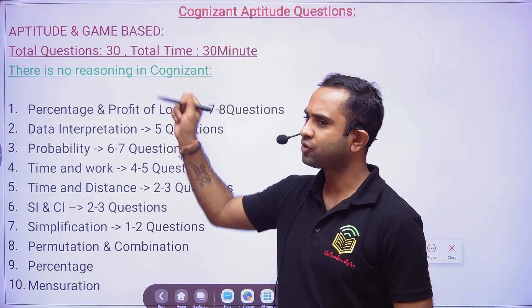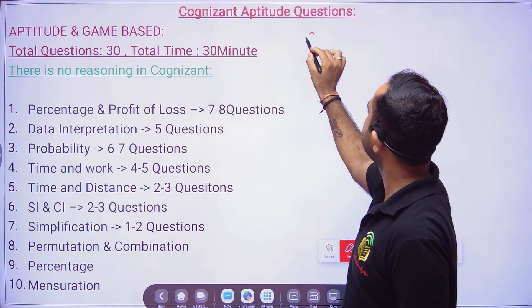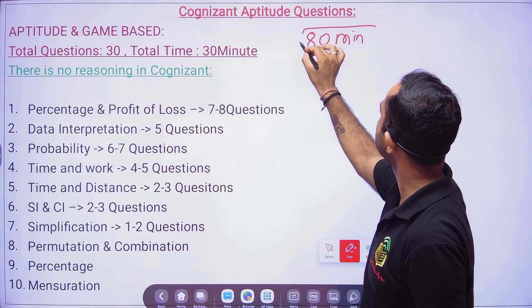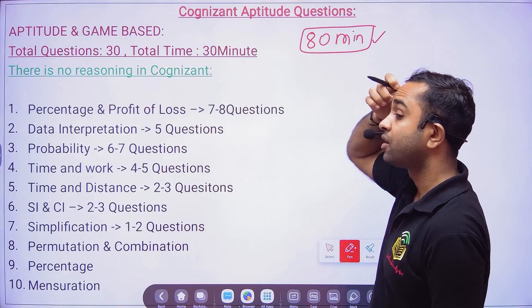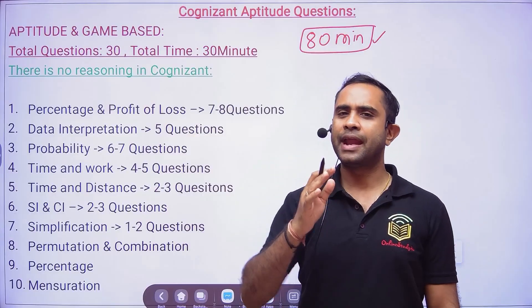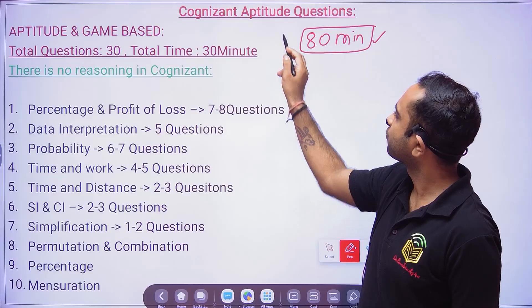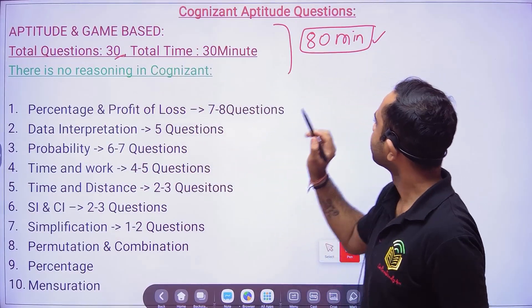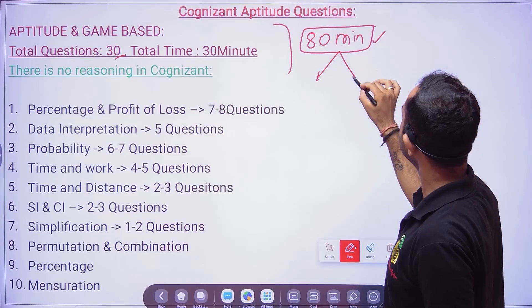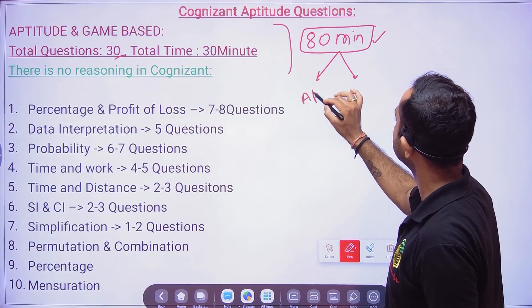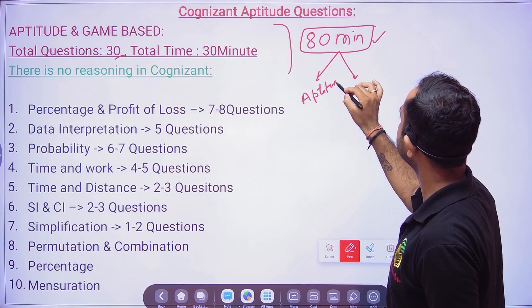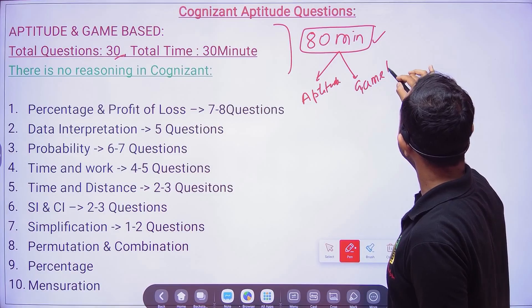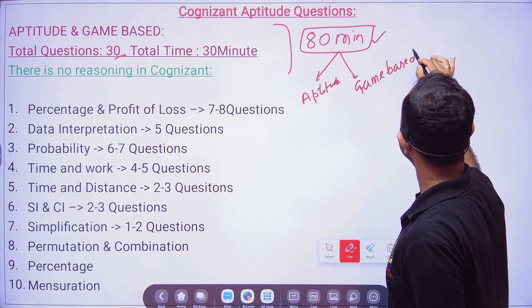The Cognizant aptitude round will be a total of 80 minutes, divided into two categories. You will be having aptitude and then you will be having game-based aptitude.